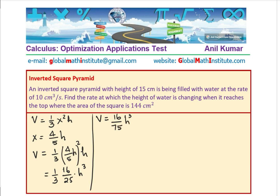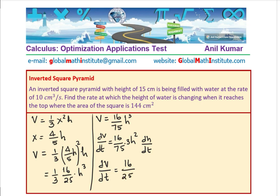Now let us differentiate and get the rate of change of volume. Differentiating implicitly: dV/dt = (16/75) × 3H² × dH/dt. Simplifying, the rate of change of volume with time is (16/25) × H² × dH/dt.